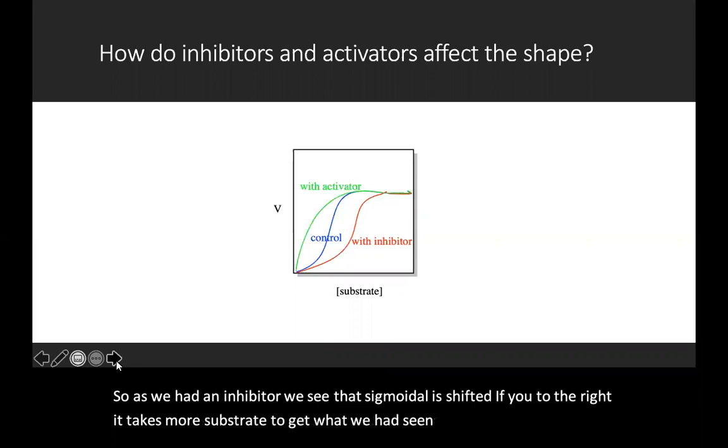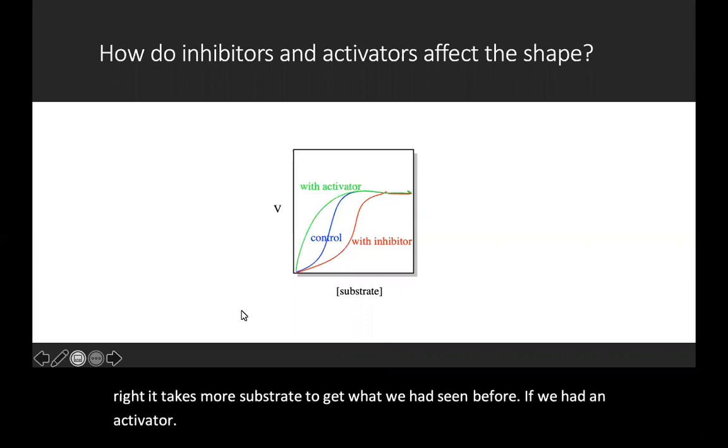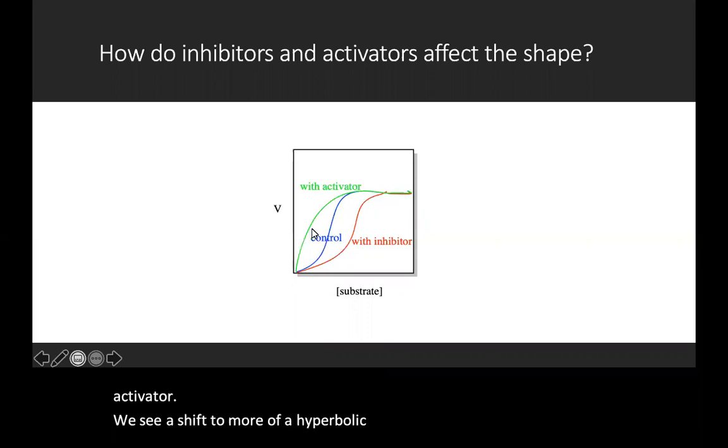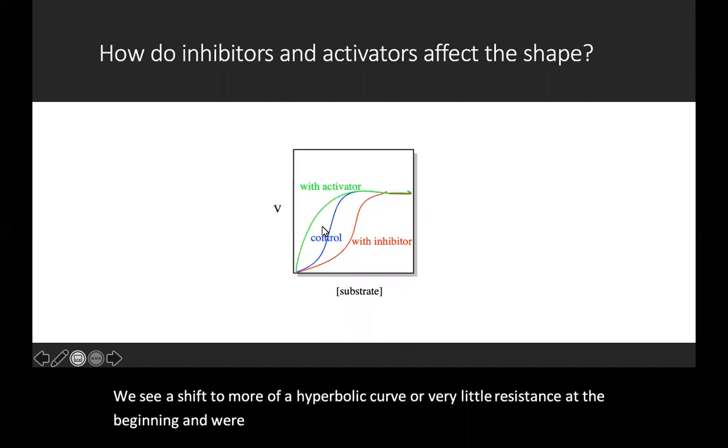If we add an activator, we see a shift to more of a hyperbolic curve or very little resistance at the beginning. And we're more closely like our Michaelis-Menten kinetics that we've seen in the past.